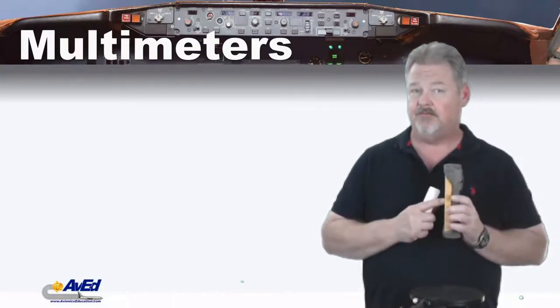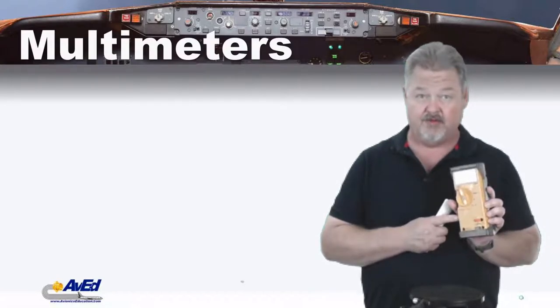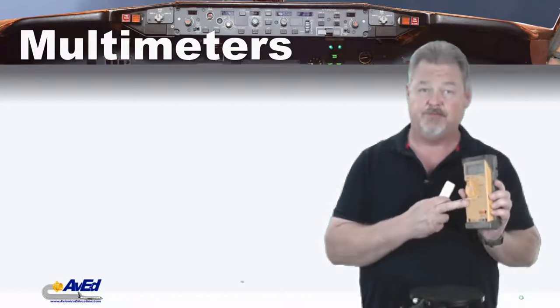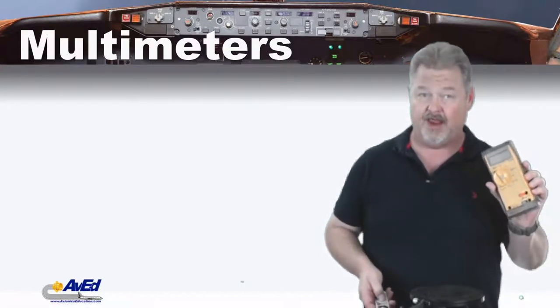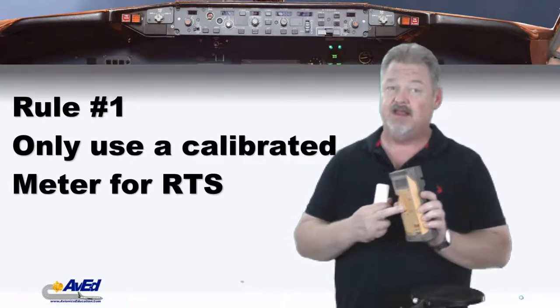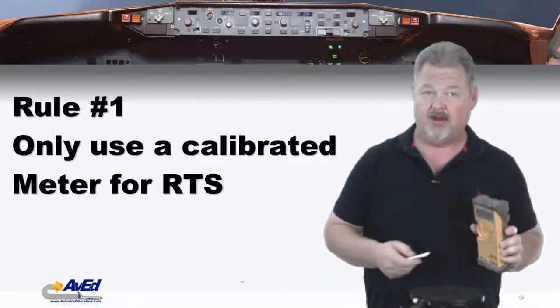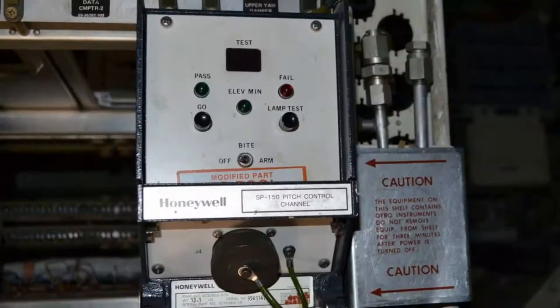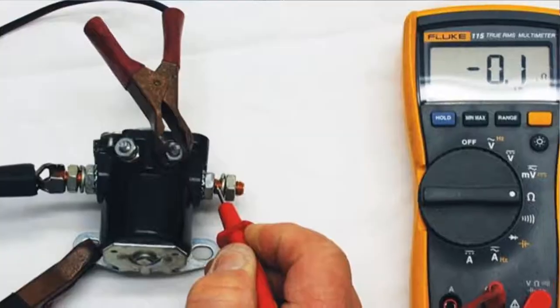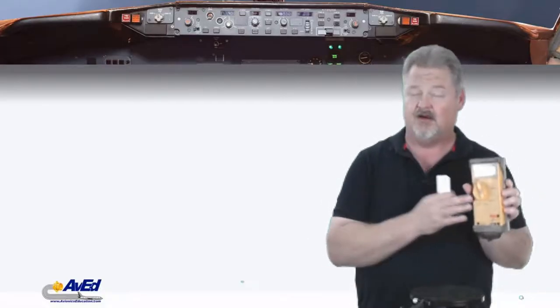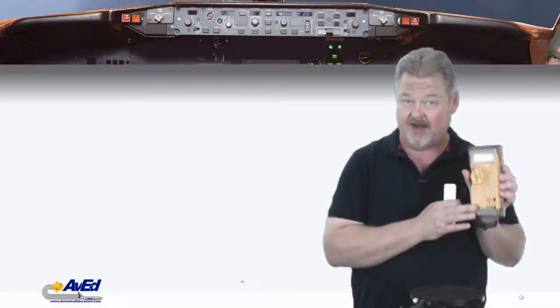We're going to talk about some rules of using a simple multimeter in this first section, and that will bring us to the first rule of multimeters when it talks about calibration. So the first rule of using a multimeter is that you cannot use a multimeter for return to service unless it's actually been calibrated. What do I mean?